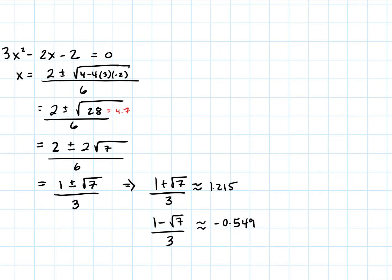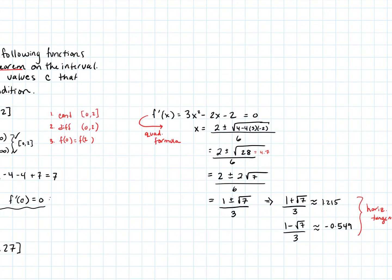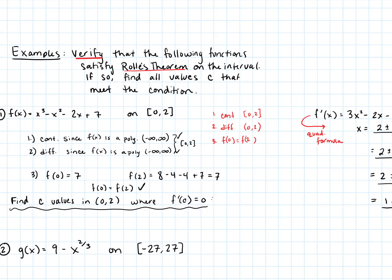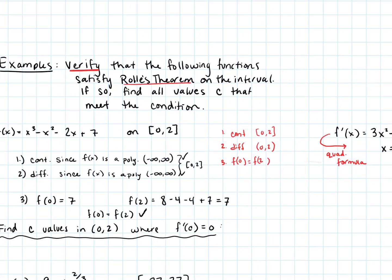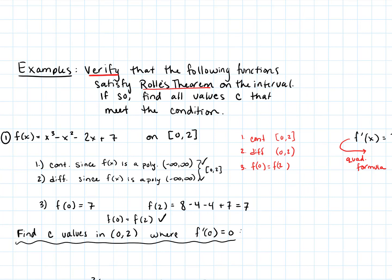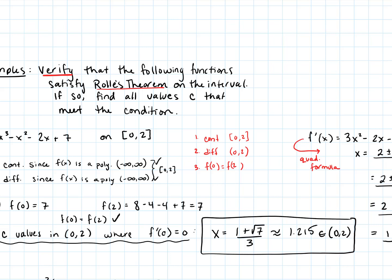These give two values: (1 + √7)/3, which is approximately 1.215, and (1 − √7)/3, which is approximately −0.549. Both are places where we have horizontal tangents, but we want the one in the interval from 0 to 2. The value approximately −0.549 is outside our interval, so the answer is c = (1 + √7)/3 ≈ 1.215, which is in (0, 2). This satisfies Rolle's Theorem.